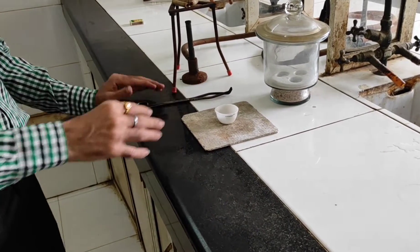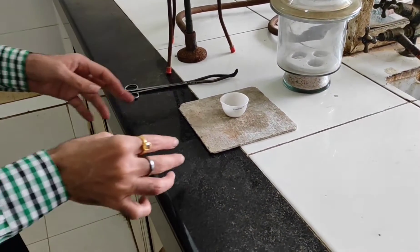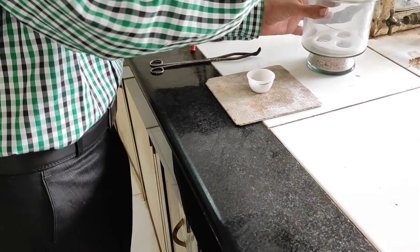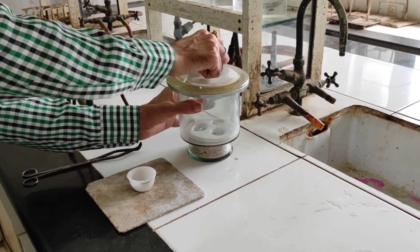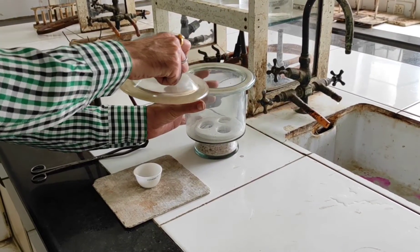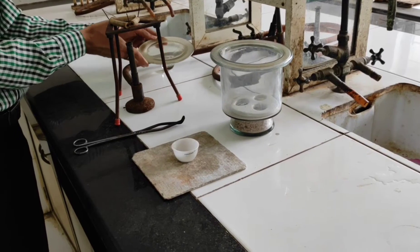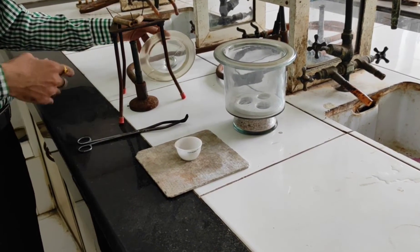Now, this has been kept on the asbestos sheet for around 5 to 10 minutes. Now, what we do is we make use of a desiccator. I told you in my previous video also how to open it. Don't lift it, you just slide it.